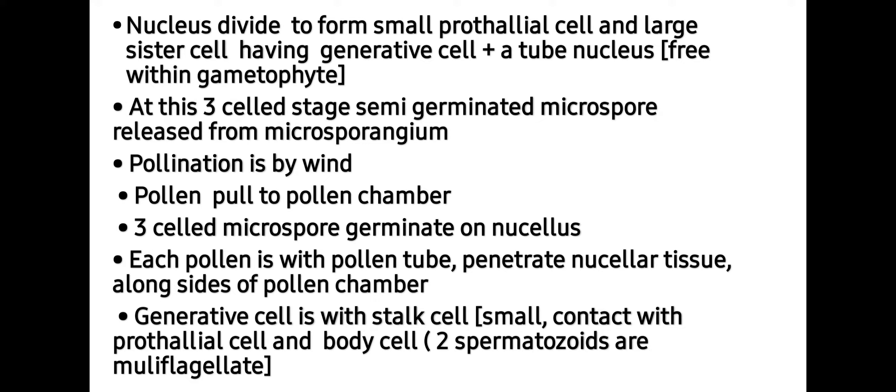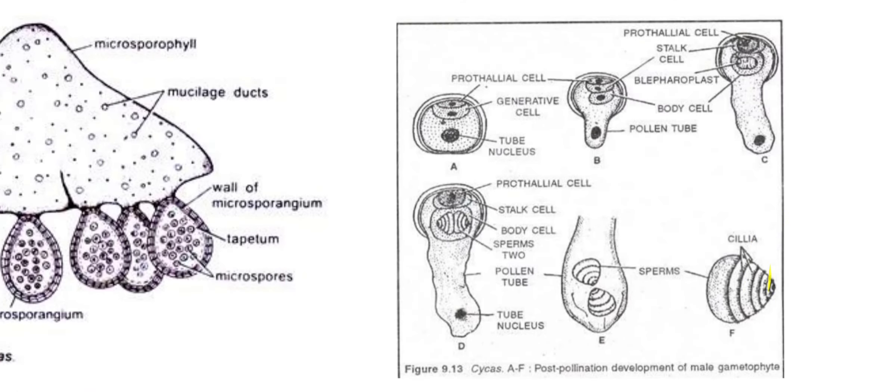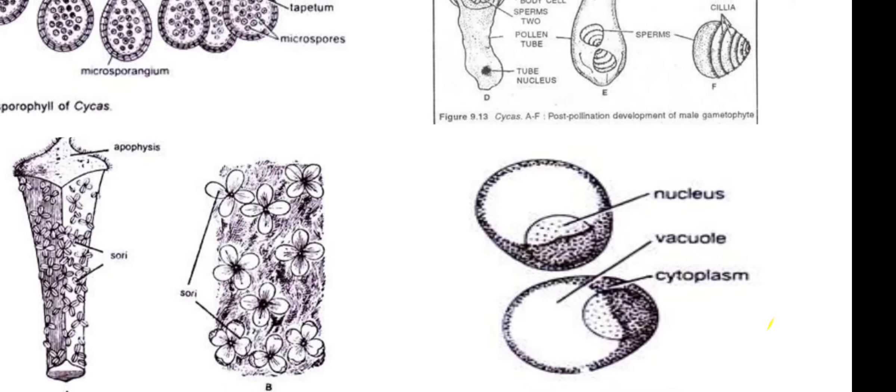Pollination is by wind, meaning anemophilous type of pollination takes place. Pollen is pulled to the pollen chamber. The three-cell microspore germinates on the nucellus. Each pollen is with a pollen tube which penetrates nucellus tissue alongside the pollen chamber. The generative cell has a stalk cell that is small and compact, with a prothallial cell and body cell, having two spermatozoids which are multiflagellate. In the first image you can see the three-cell stage of the pollen grain developing to form multiflagellated sperms.